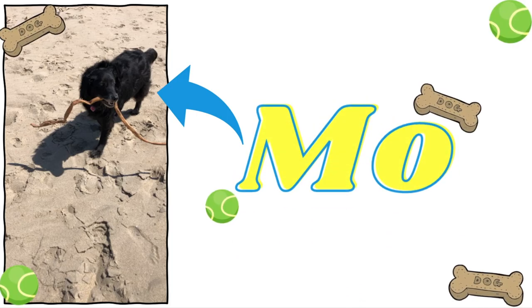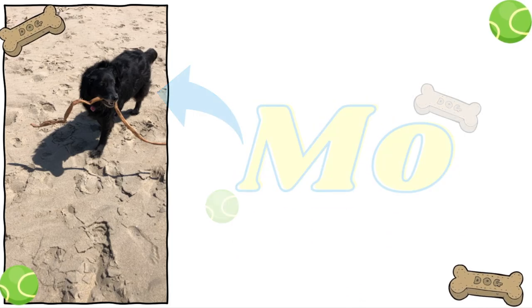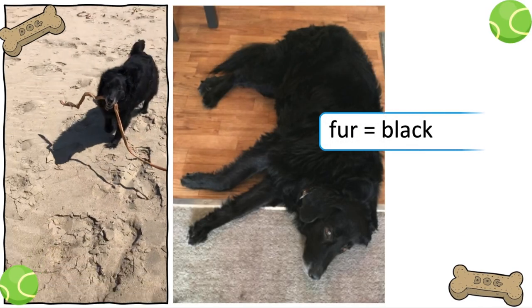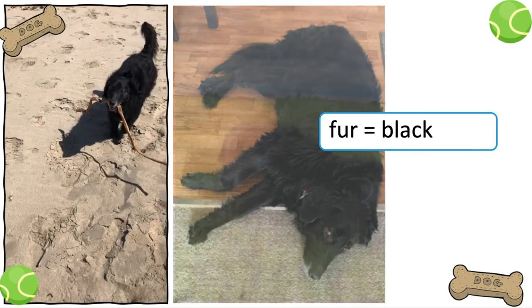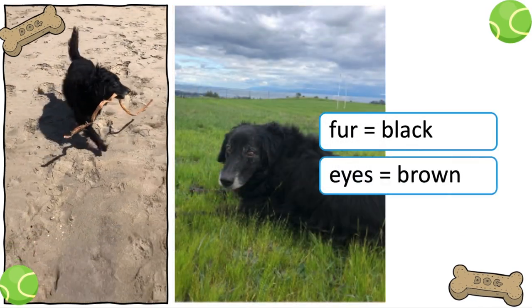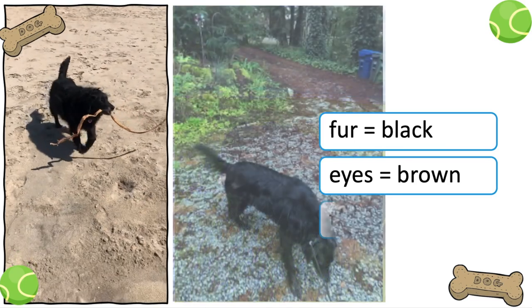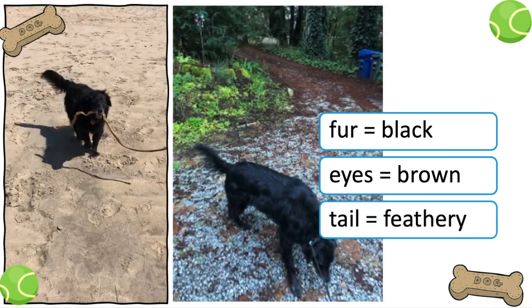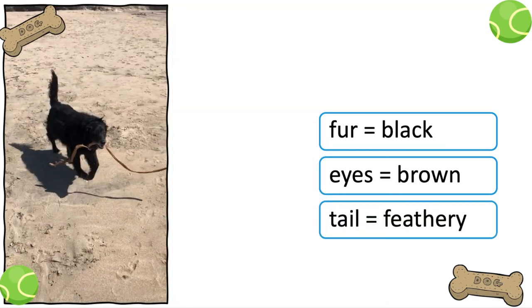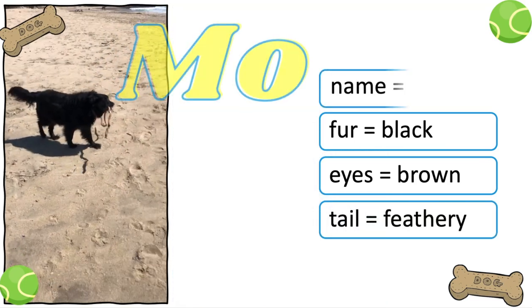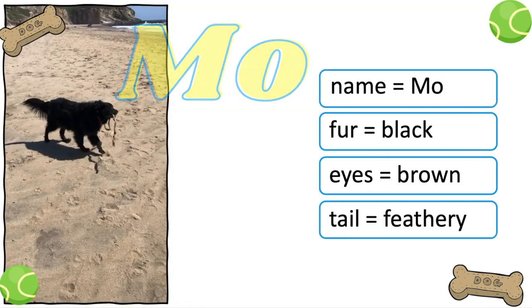This is Mo. Mo has fur that is black, eyes that are brown, and a tail that is feathery. She also has a name, of course.